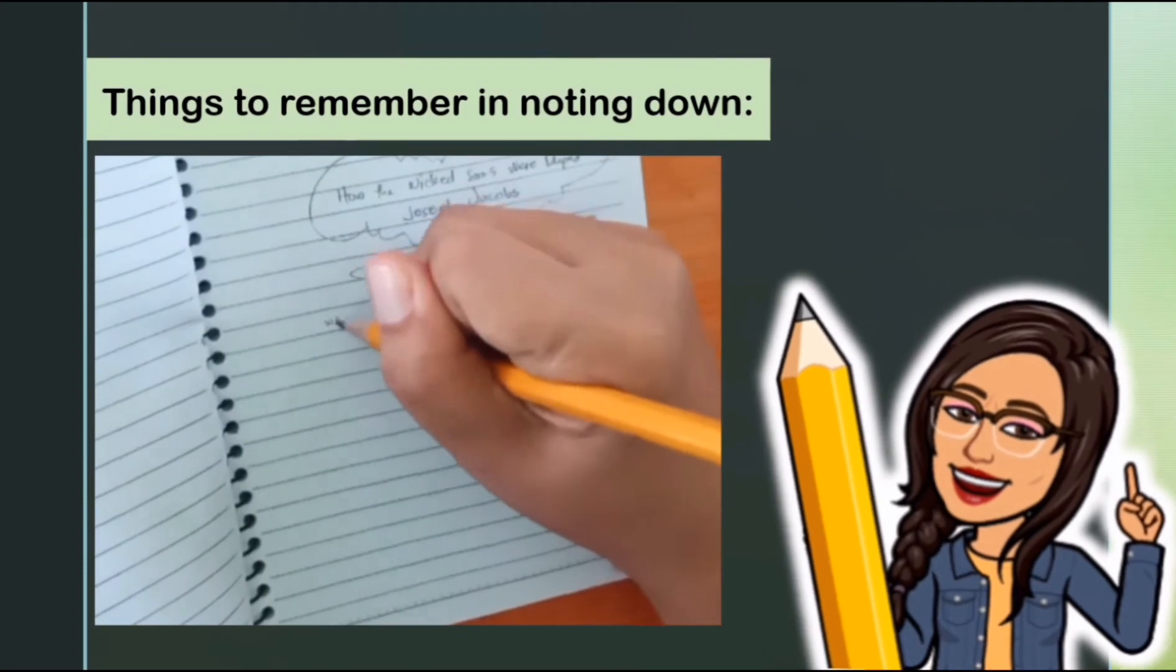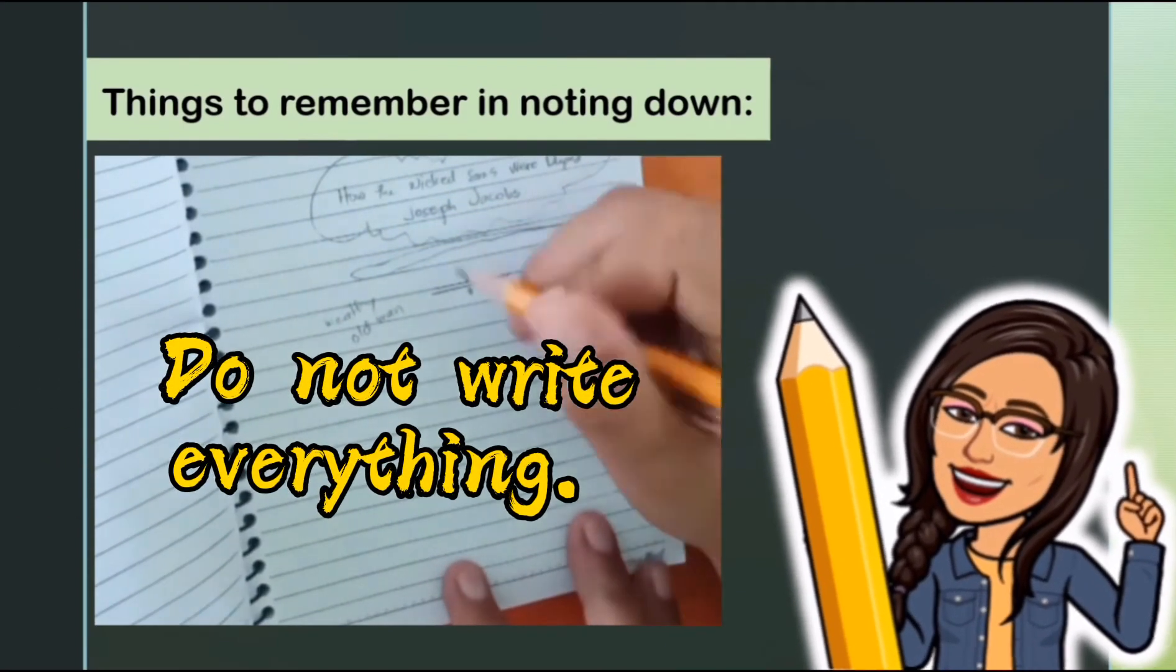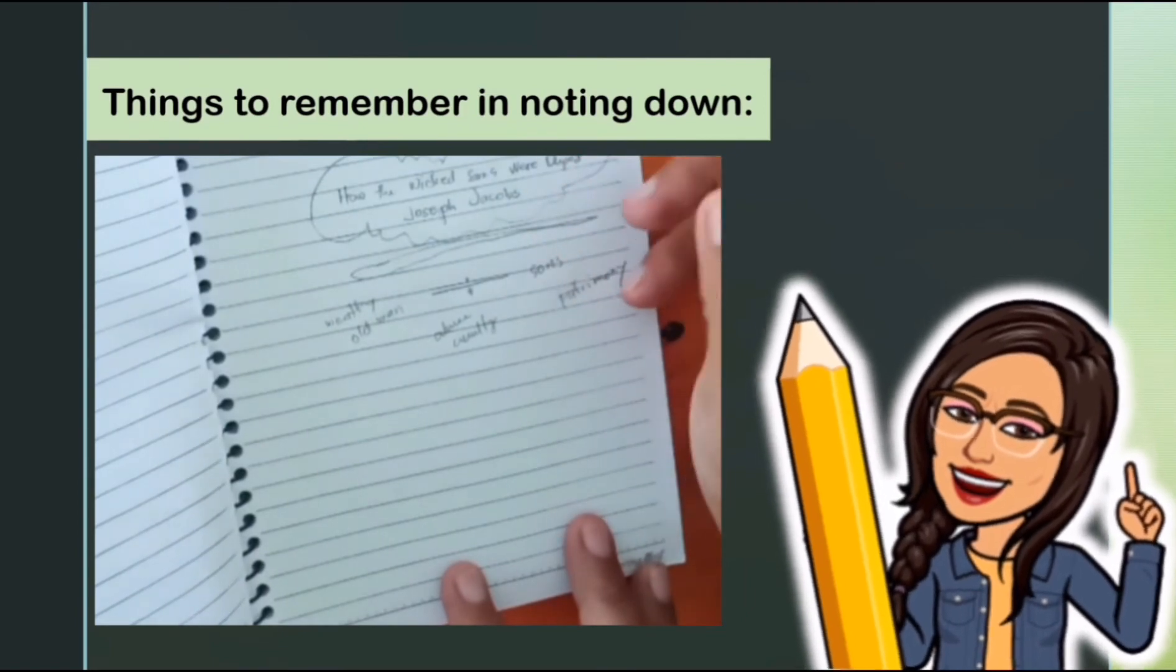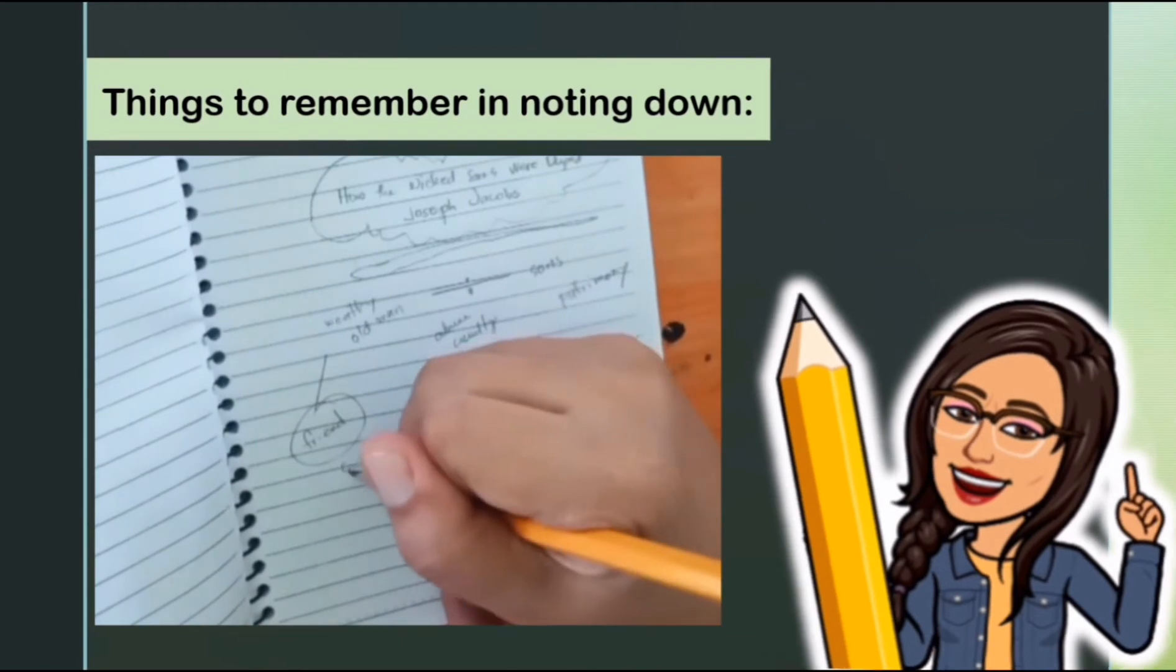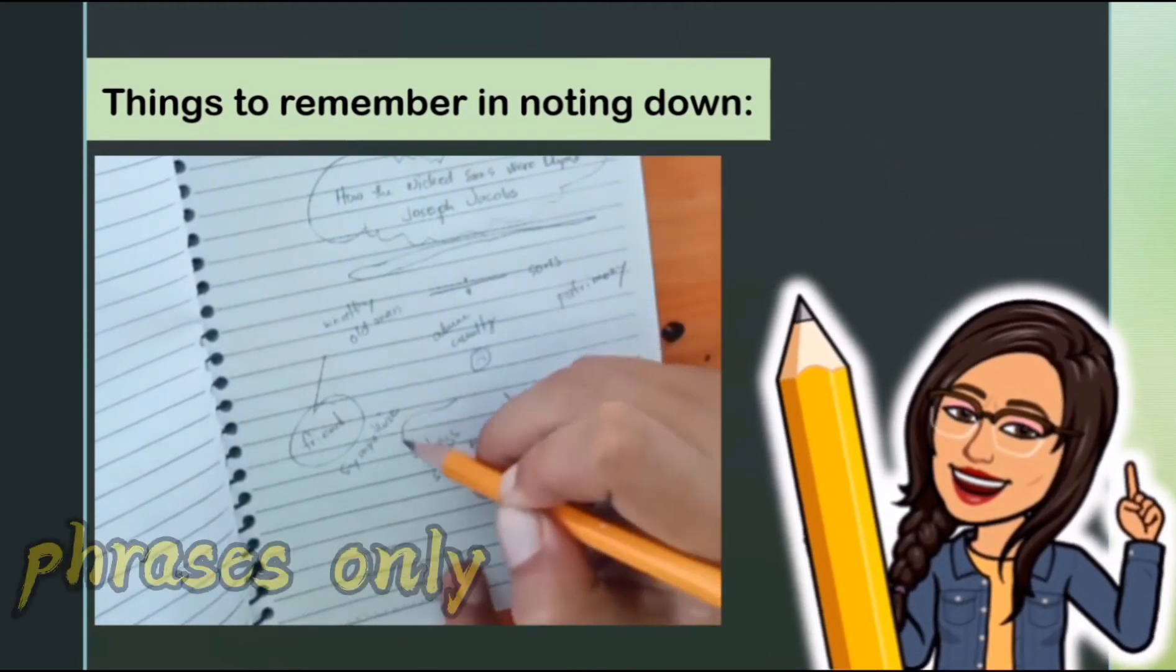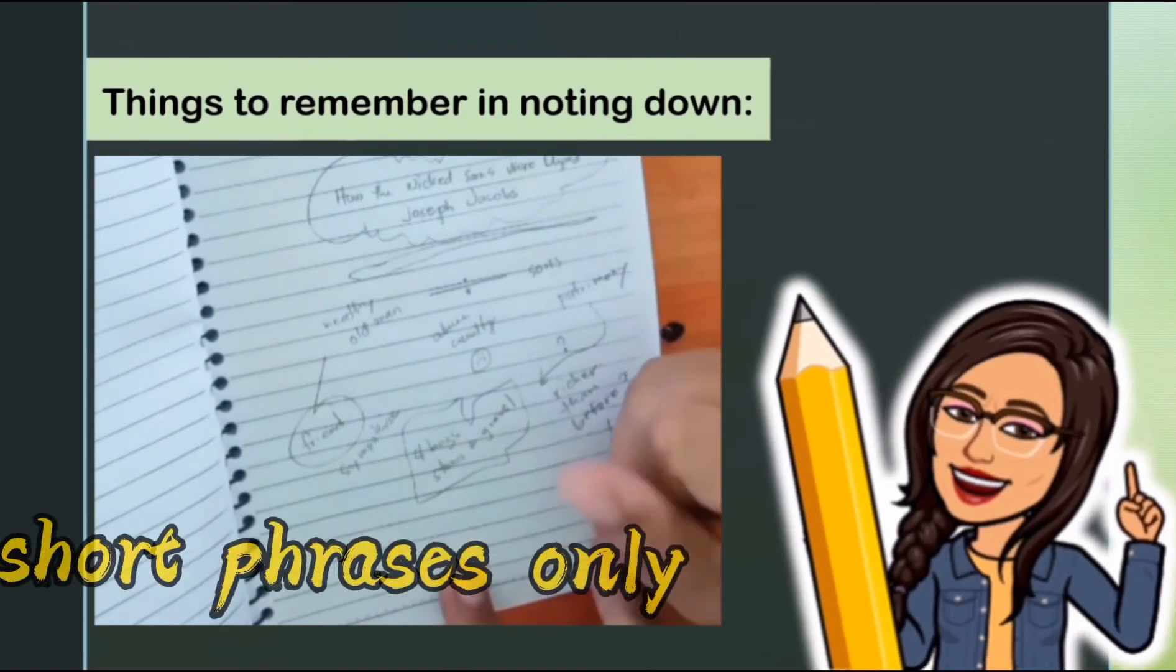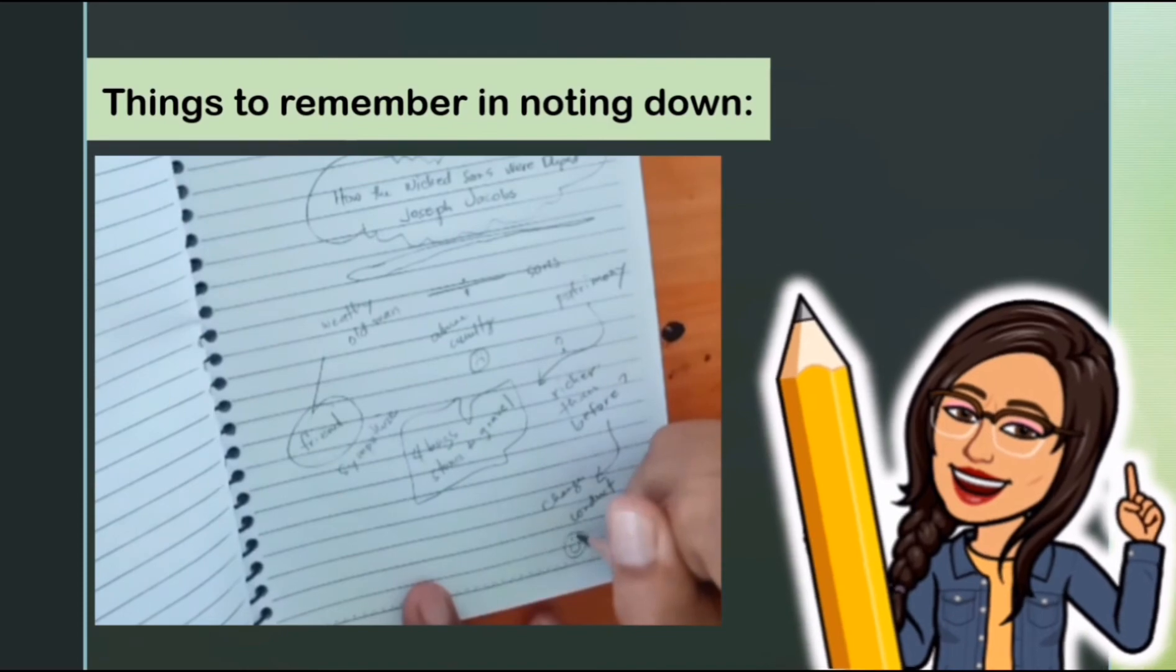Things to remember in noting down: Number one, don't write every single word you hear. Number two, highlight only the key words. Number three, note down words or expressions that the speaker repeats more than twice - these are important. Number four, stick to short phrases and bullet points. Number five, have your own personal abbreviations for words to save time and effort on your part.